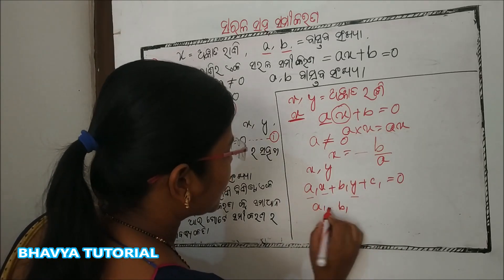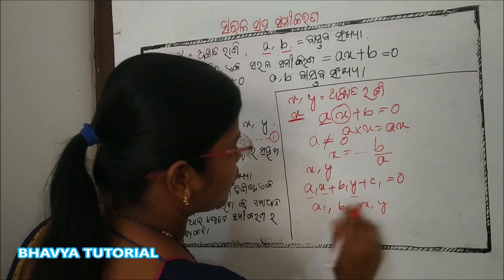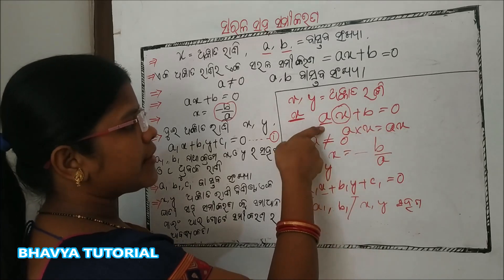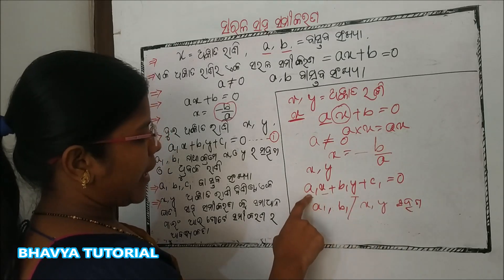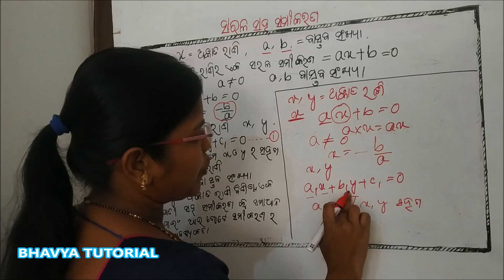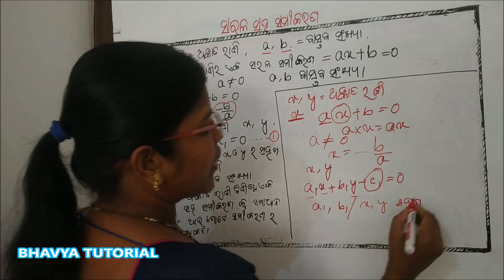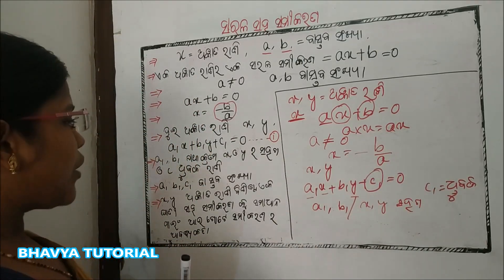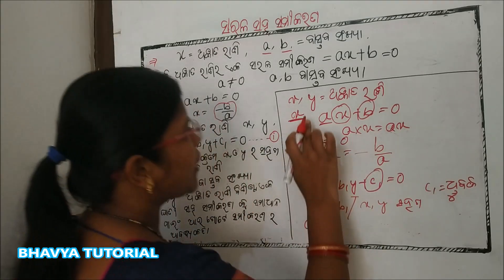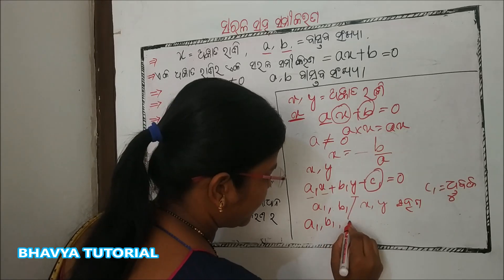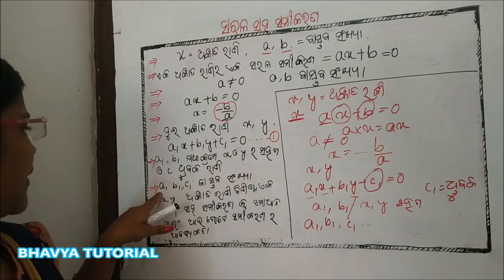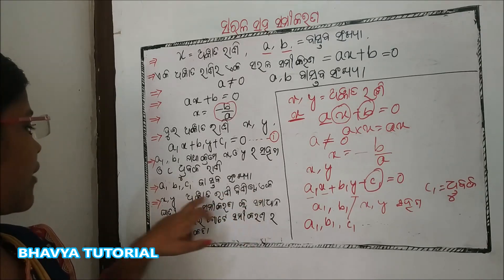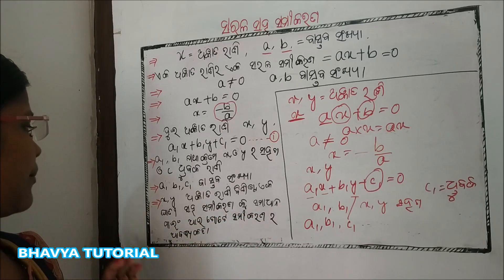a1, b1 equal to 0. The system involves a1, b1, c1. One master — a1, b1, c1 — covering the rest of this.